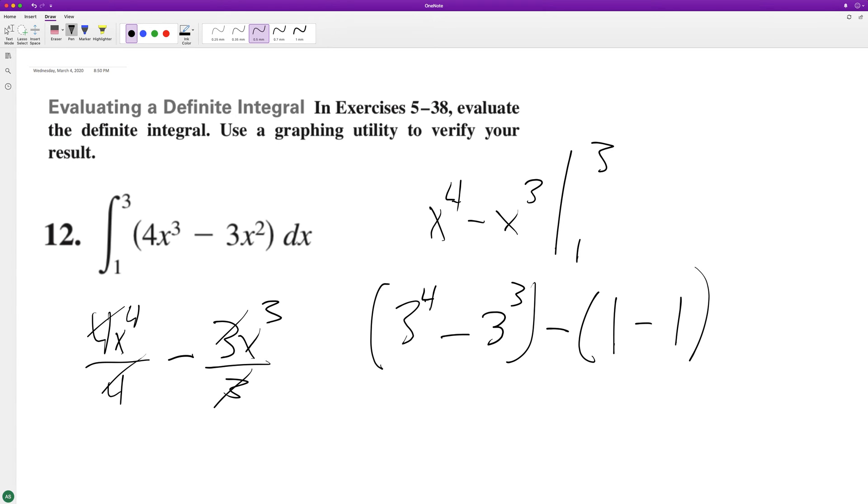All right, so this is equal to 81 minus 27 minus 0, and 81 minus 27 is equal to 54.